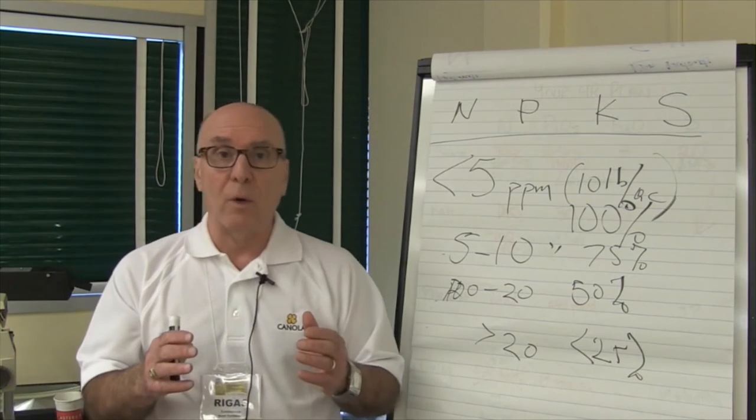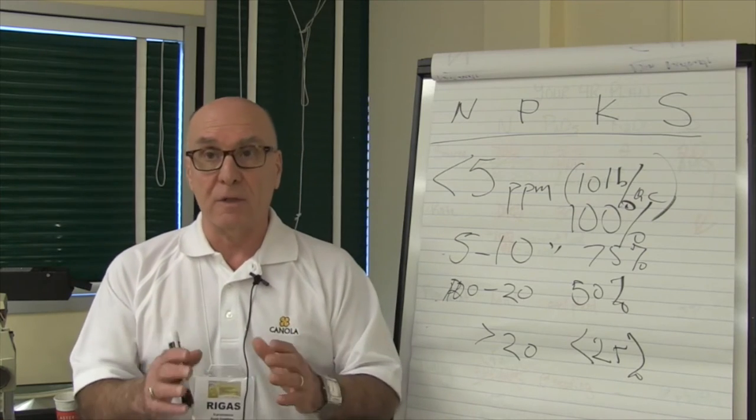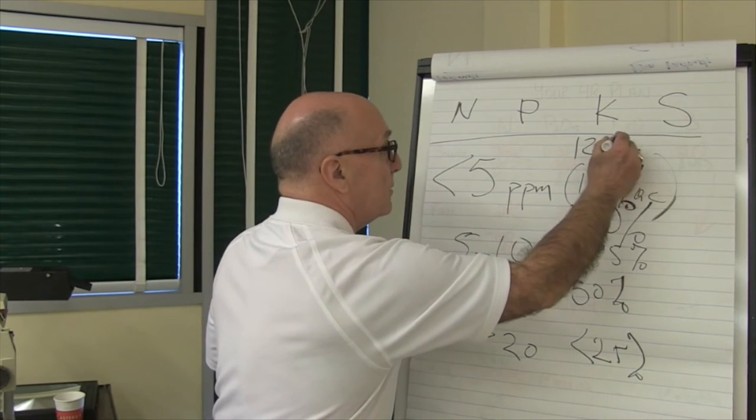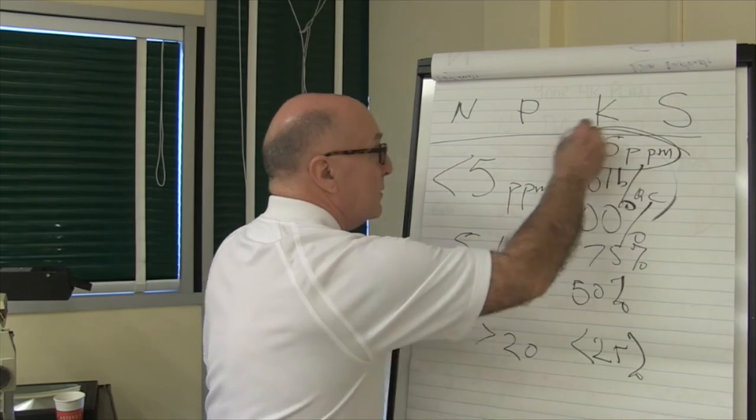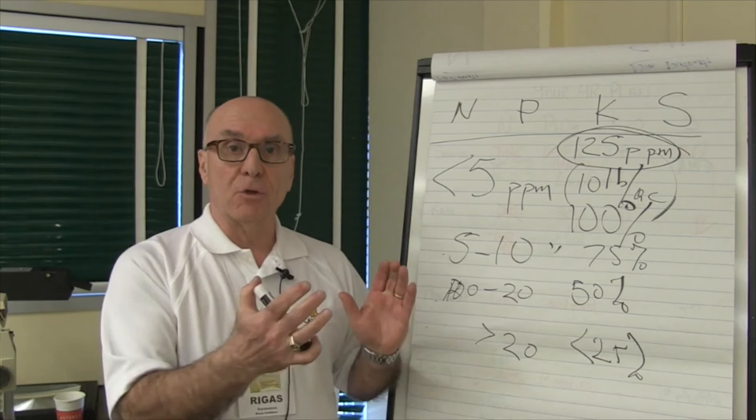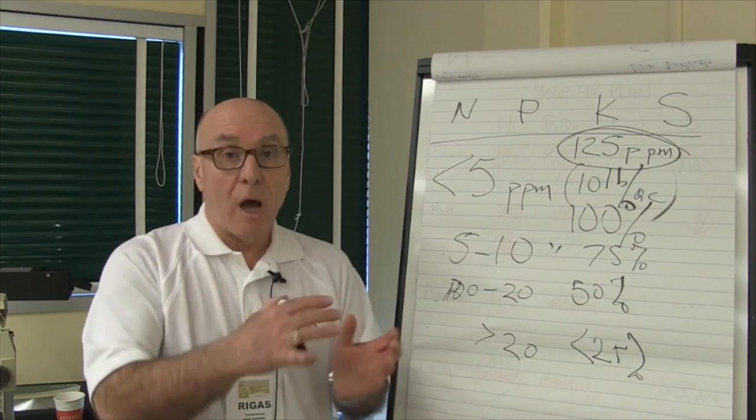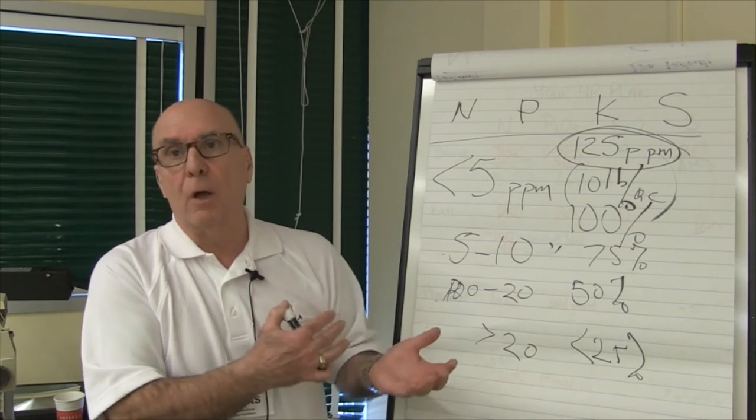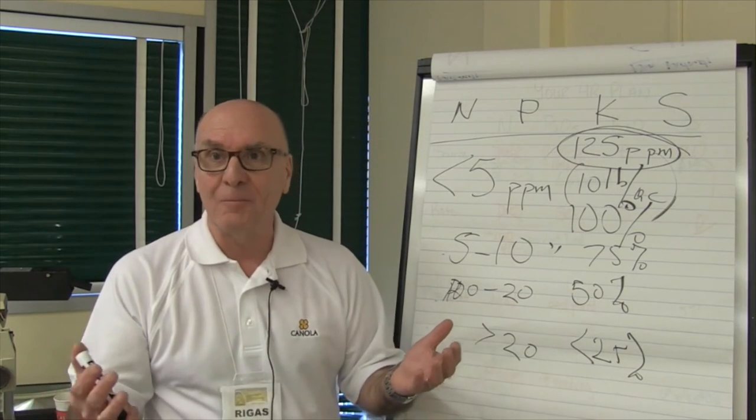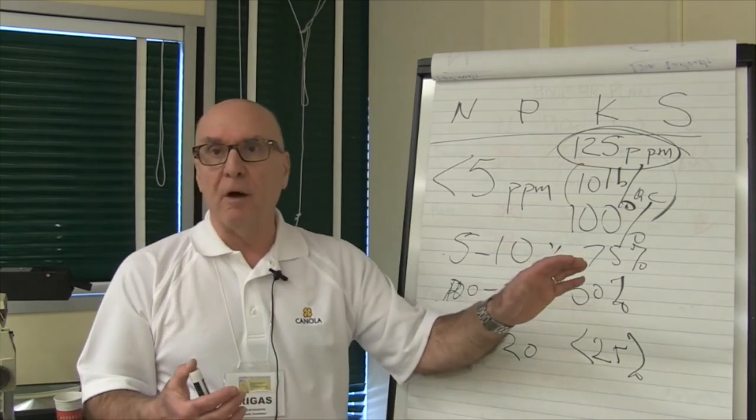So potassium, one thing to remember is that the generally accepted critical level in Western Canada based on a lot of experiments is 125 parts per million. This will be 250 pounds, which means if your soil test is less than that, you'll have a 95% probability of getting a response. How much response you're going to get depends very much on how low it is. If it's 50 PPM, you may be getting like a thousand percent yield increase. But if it is 110 PPM, you may only get 10% yield increase.